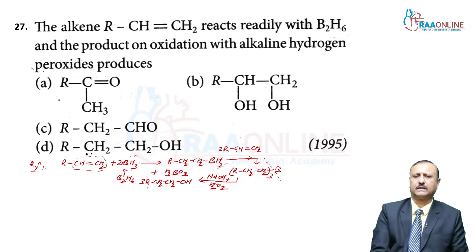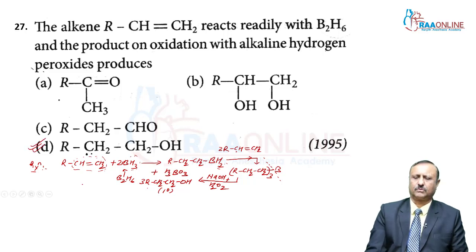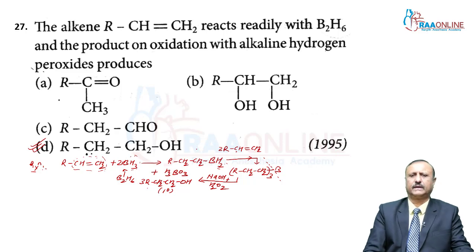The main product is RCH₂CH₂OH — a primary (1°) alcohol. Looking at the options: ketone, diol, aldehyde, and primary alcohol — the primary alcohol is in option D. So answer is D for question 27 (NEET 1995).